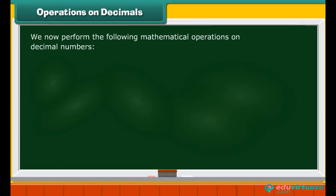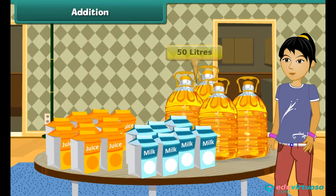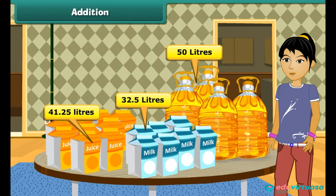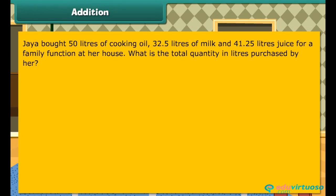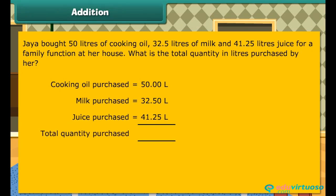We now perform mathematical operations on decimal numbers: addition, subtraction, multiplication, and division. For addition, Jaya bought 50 litres of cooking oil, 32.5 litres of milk and 41.25 litres of juice for a family function. Adding these three quantities — 50.00 + 32.50 + 41.25 — gives a total quantity of 123.75 litres purchased by Jaya.